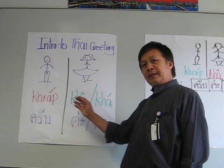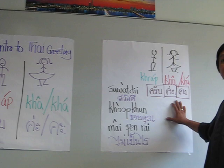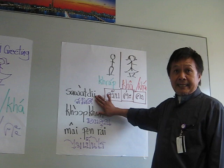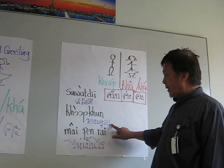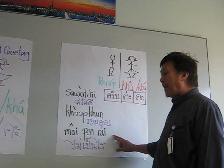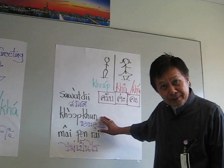Now let's look at the basic simple greetings. Normally, we have the word sawadee — that can mean hello or goodbye. And we have the word khob khun, which means thank you. And we have the word maipenrai, which means never mind or you're welcome. When people say khob khun to you, you say maipenrai.